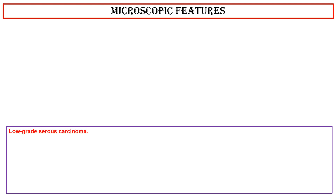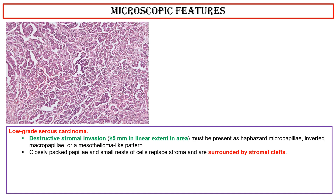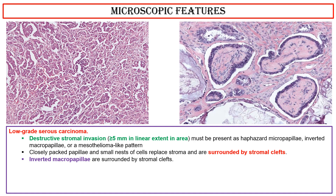Microscopic features of low-grade serous carcinoma: Destructive stromal invasion, equal to or more than 5 mm in linear extent, must be present. This photo shows closely packed papillae and small nests of cells replacing stroma and surrounded by stromal clefts. This photo shows inverted macropapillae, which are surrounded by stromal clefts.